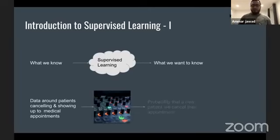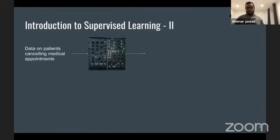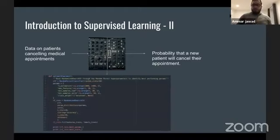So supervised learning is one of the three types of machine learning where we have some information already, then we send that information through to a supervised learning algorithm and out comes what it is we want to know. So making it a bit more tangible, let's say we have data around patients cancelling or showing up to their medical appointments. That's kind of the data set we have on people, both people that do show up and people that don't show up. Their age, gender, so on and so forth. And then we tune some knobs inside the machine learning model and out comes the result that we want, which is really a probability. How likely a person, a new person coming into a clinic is to cancel their appointment.